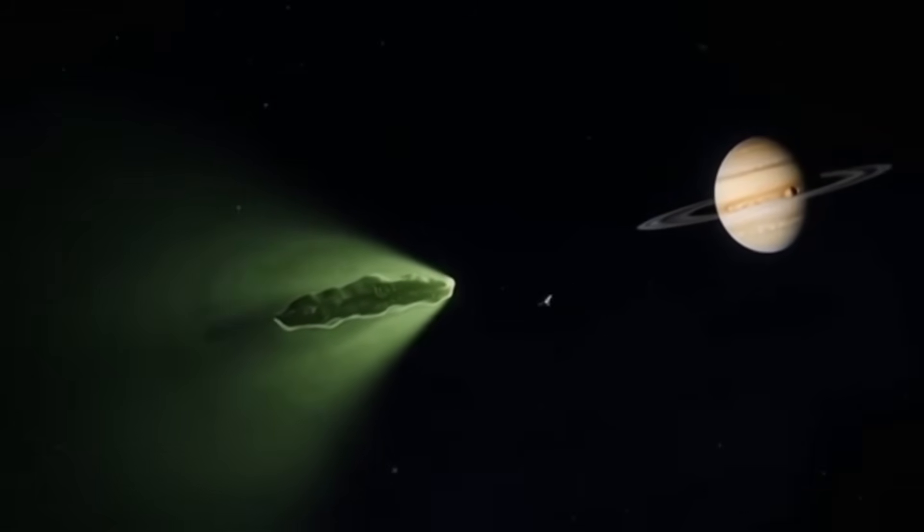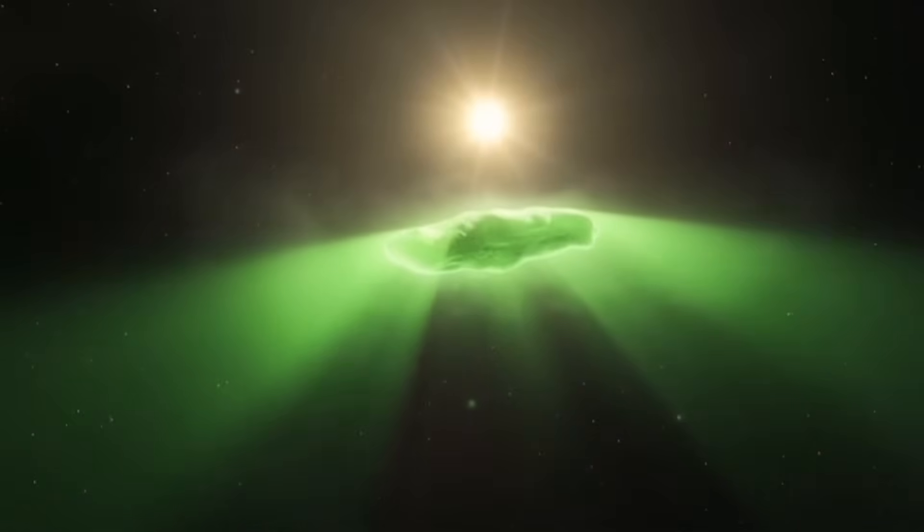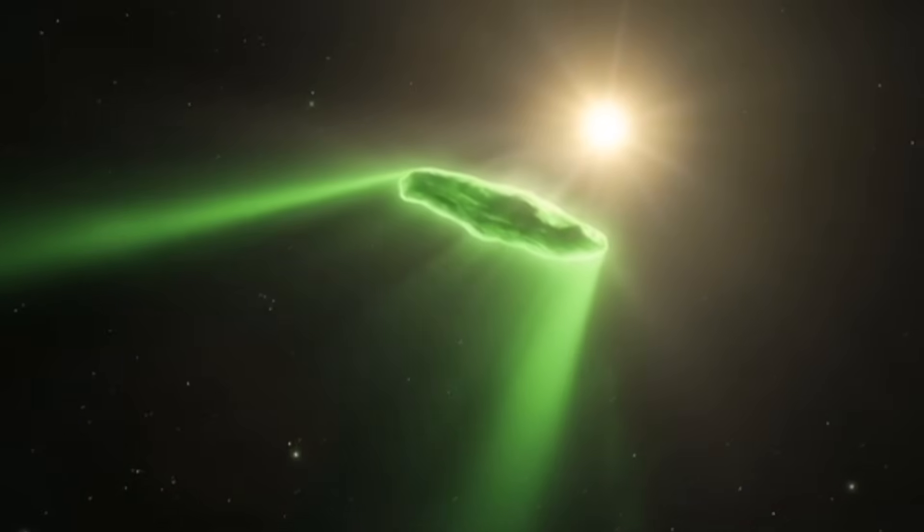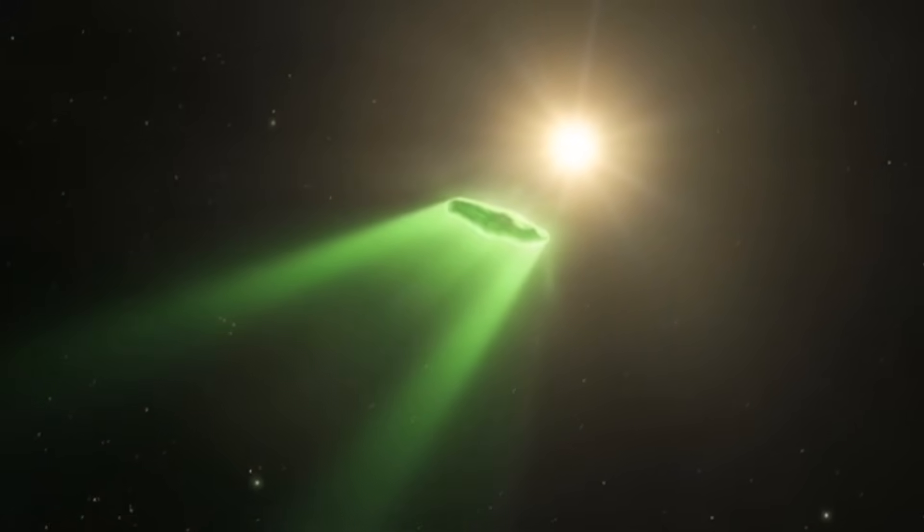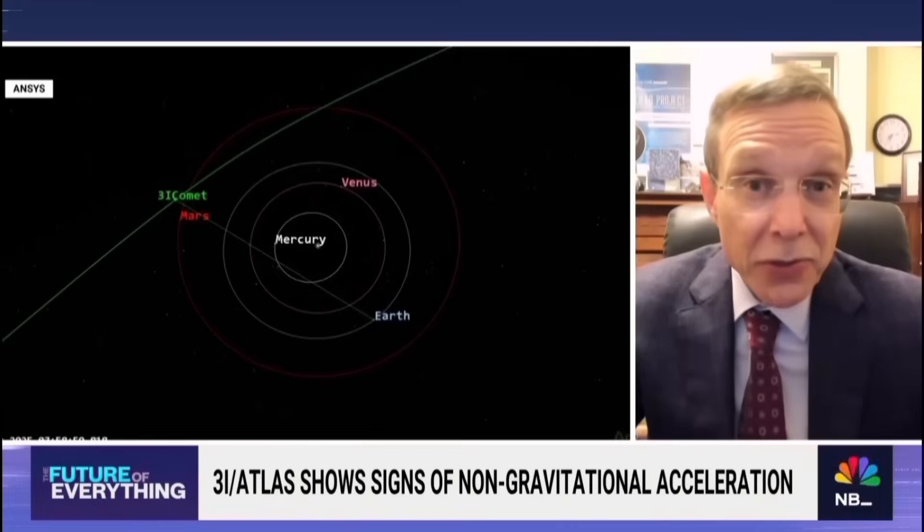Let me tell you what actually happened. As we already know, 3i Atlas experienced an unexpected non-gravitational acceleration when it passed close to the sun. In other words, it suddenly got a small push that slightly changed its trajectory. But here's the strange part. Scientists still don't know what caused that push.